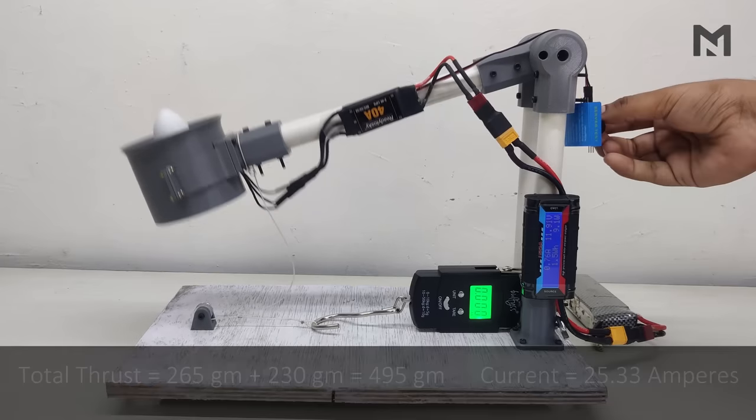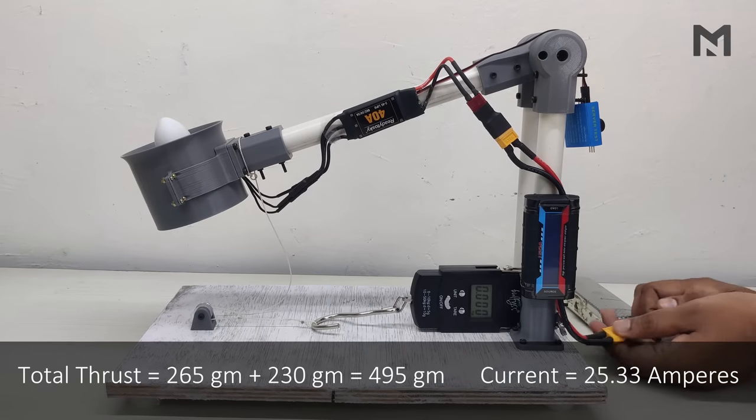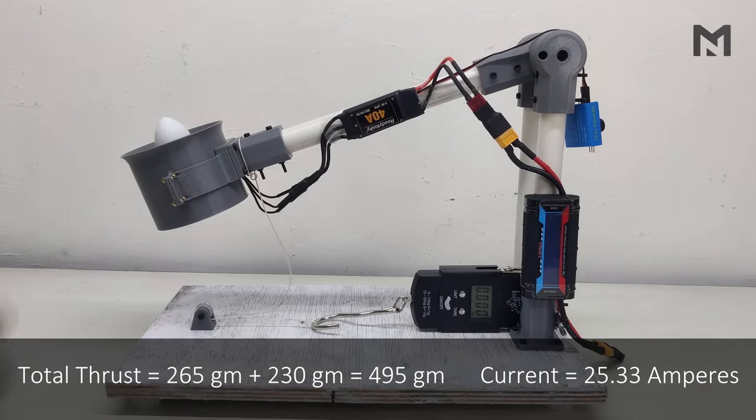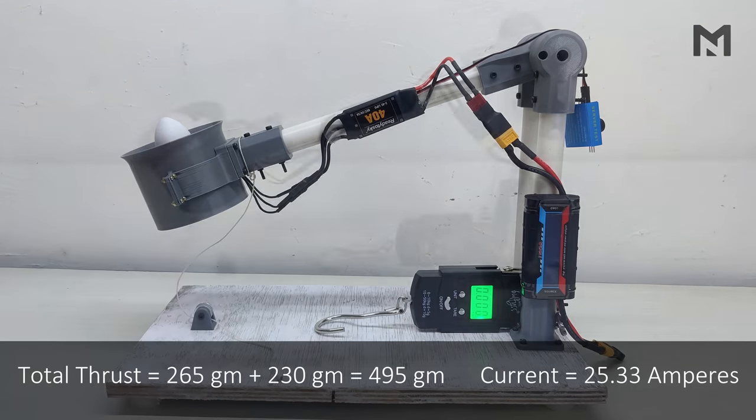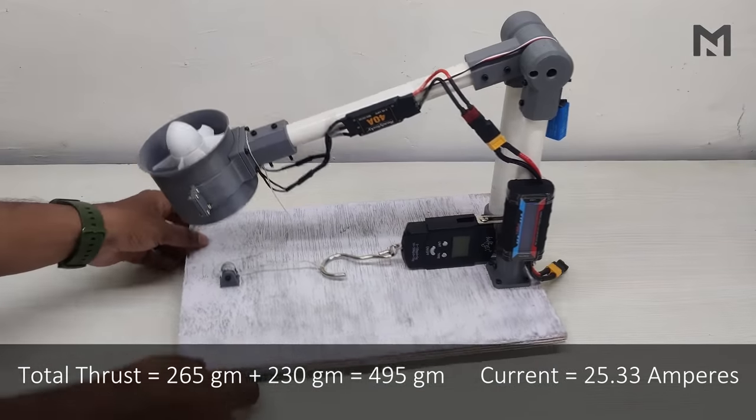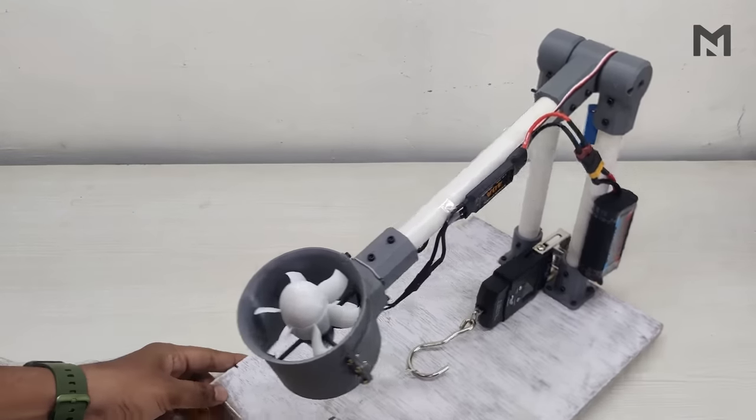The maximum thrust we got was 265 grams at 25.33 amperes. Adding the ideal weight to lift the arm, that is 230 grams, we get the total thrust of 495 grams at 25.33 amperes. Now I will replace this propeller with the eight-blade propeller.